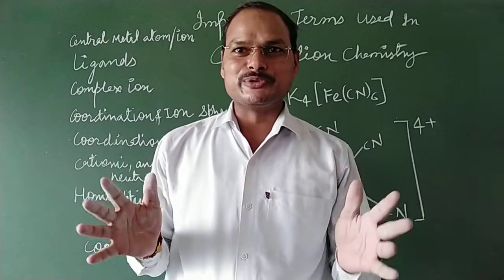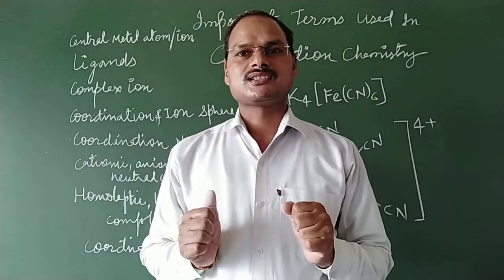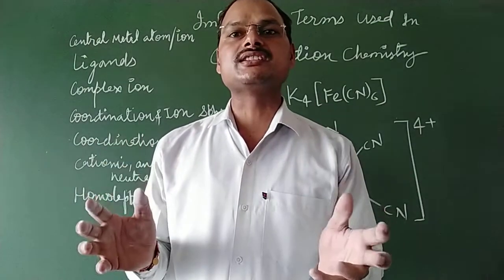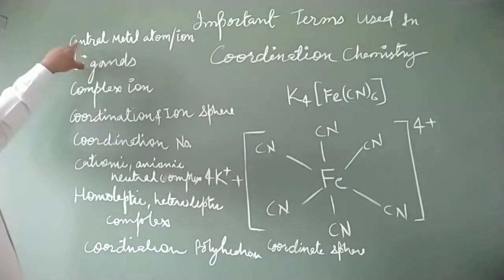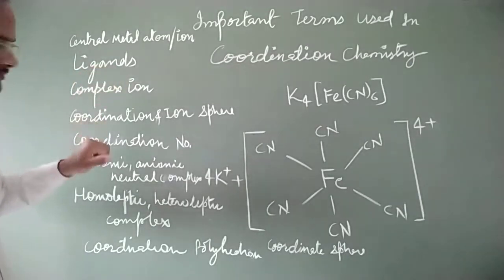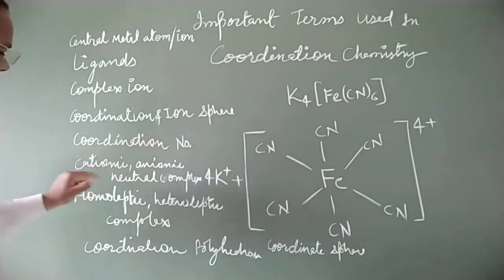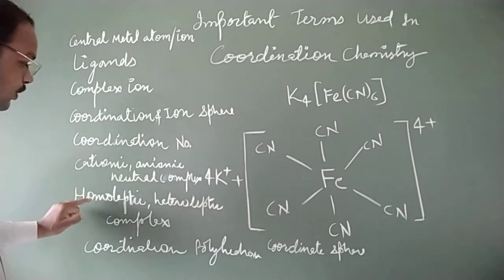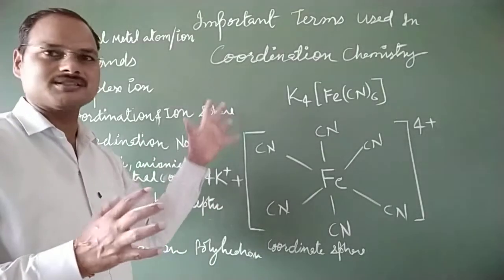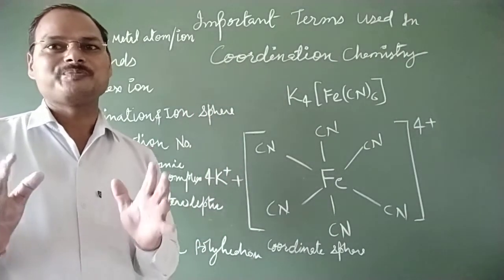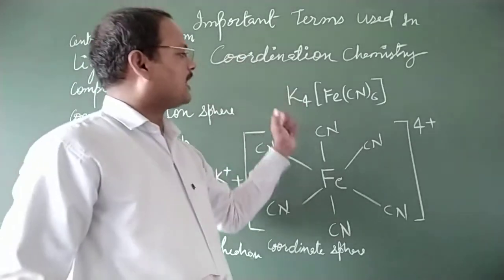Good morning students. Through this video I am going to explain very important terms related to coordination chemistry. I will explain: central metal ion or atom, ligands, complex ion, coordination sphere or ionic sphere, coordination number, cationic, anionic or neutral complexes, homoleptic and heteroleptic complexes, and coordination polyhedron. These are the important terms which will be used in coordination chemistry.